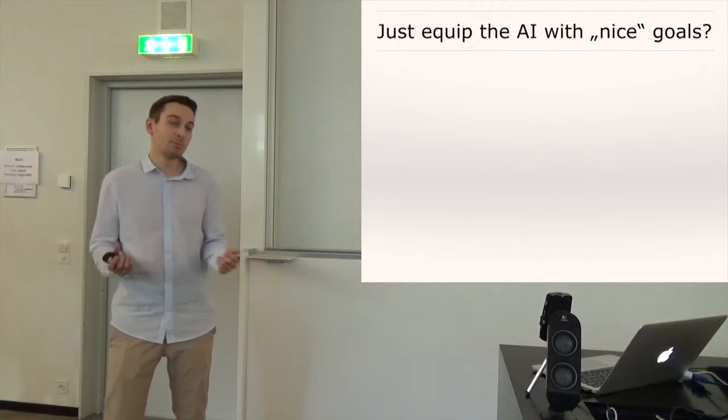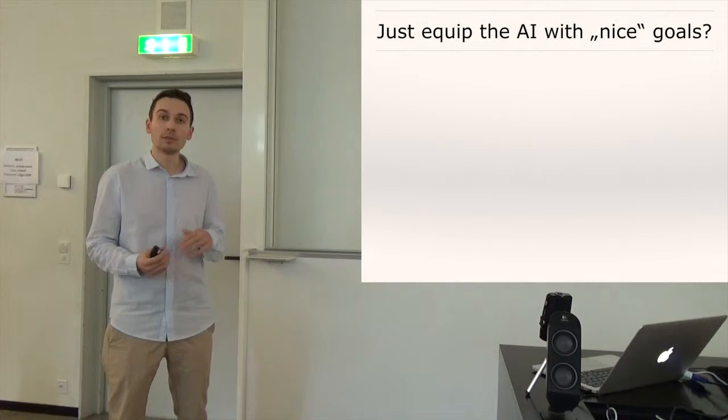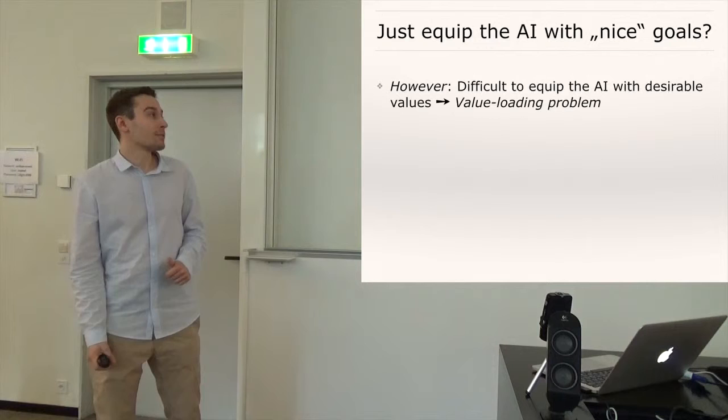So why don't we just equip the AI with nice goals like with friendly goals? I mean nobody wants to make a super intelligent paper clip for example. So I mean that seems to be a very good idea but the problem is that it's pretty hard to